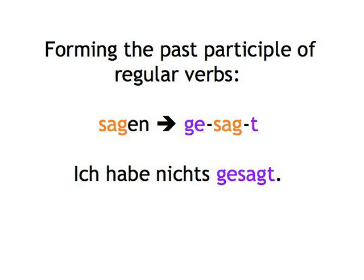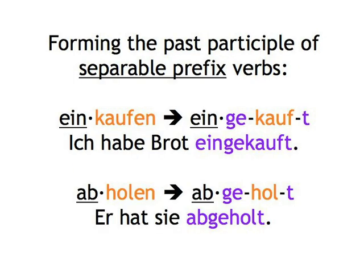Where we have a separable prefix in verbs like einkaufen or abholen, the ge- is put in between the prefix and the stem. So we get: einkaufen → eingekauft. Ich habe Brot eingekauft. Abholen → abgeholt. Er hat sie abgeholt.